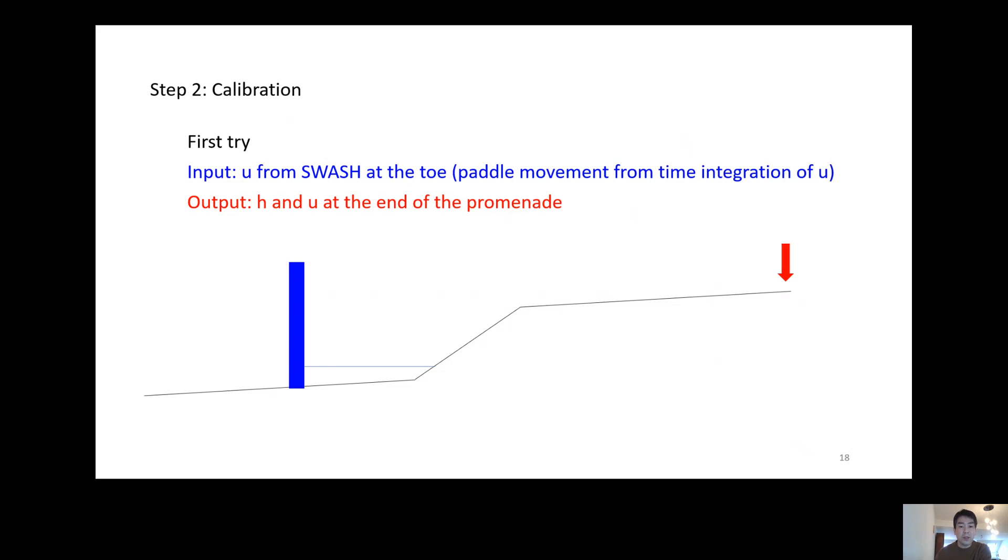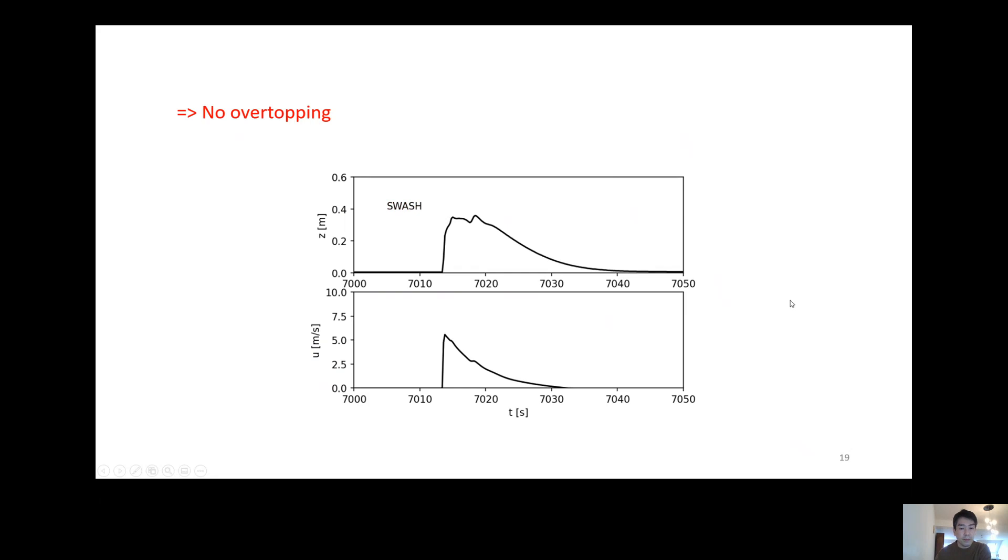However, it was not successful. The possible reason is that the water mass was too limited, as can be seen in the figure. Note that this is one of the reasons that the conventional coupling methods do not work in such cases. Note that this results in no overtopping.